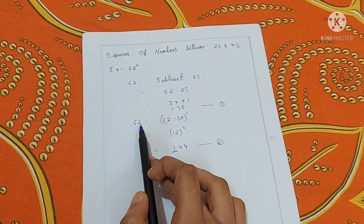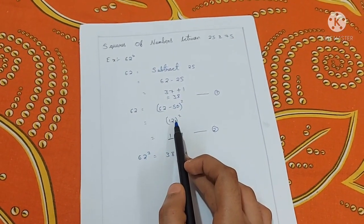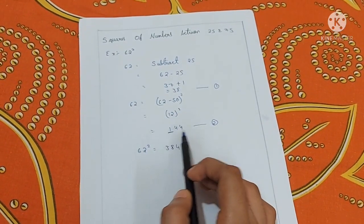Next, the second step is 62 minus 50 square. That is the difference from 50, which is 12. Now square the number. 12 square equals 144.